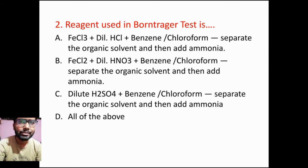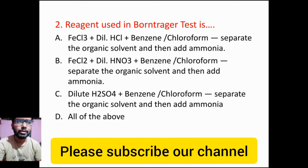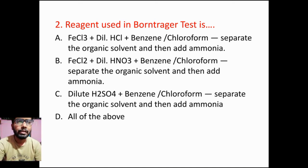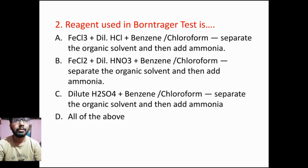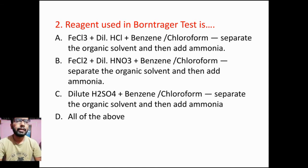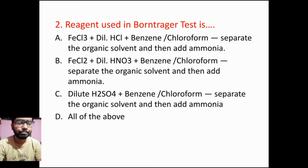Coming to the next question: reagent used in Bornträger test is. Option A: FeCl3 plus dilute HCl plus benzene or chloroform — separate the organic solvent and then add ammonia. Option B: FeCl2 plus dilute HNO3, then add benzene or chloroform, separate the organic solvent layer and add ammonia. Option C: Dilute H2SO4 plus benzene or chloroform, then separate the organic solvent and add ammonia. Option D: All of the above.